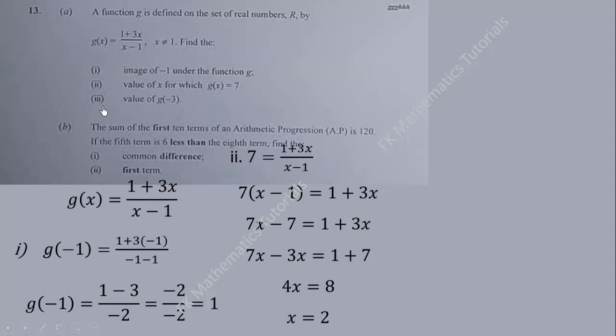Part (iii): Find the value of g(-3). So wherever we see x, we put -3. You get 1 + 3(-3), which is 1 - 9, all over -4. 1 - 9 is -8, so -8/-4 gives you 2. Now let's proceed to part (b).